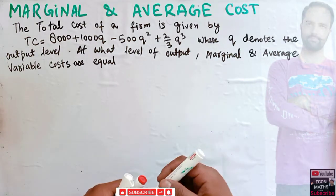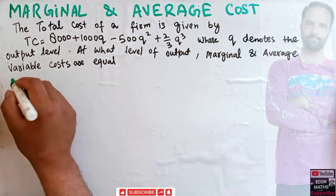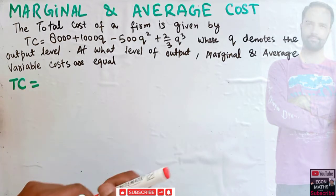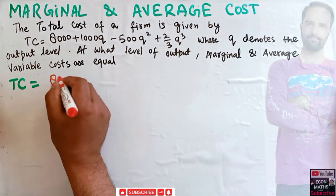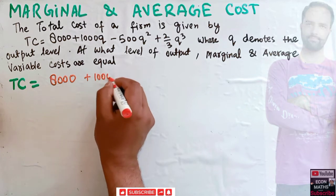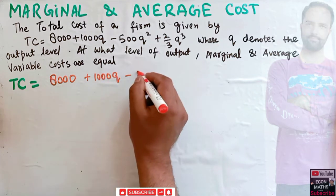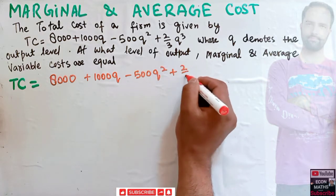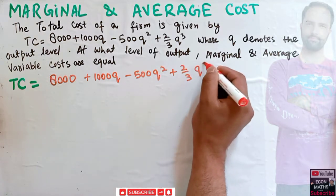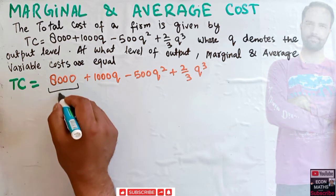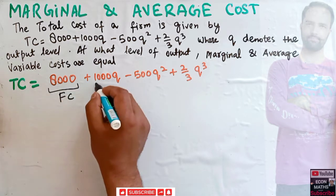We are given the total cost as TC = 8000 + 1000Q - 500Q² + (2/3)Q³. In this expression, the term 8000 is our fixed cost, and the remaining terms form our variable cost.